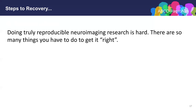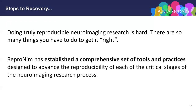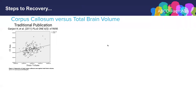Having spent a few moments talking about the problems, we come to a quick realization that doing truly reproducible neuroimaging research is hard — there are so many things you have to do in order to get it right. Part of the purpose of this course is to introduce you to a comprehensive set of tools and practices designed to advance the reproducibility of each of these critical stages of the neuroimaging research process. By way of providing a high-level guide to what ReproNim is attempting to accomplish, let's consider the following example: a traditional publication looking at corpus callosum volume as a function of total brain volume.